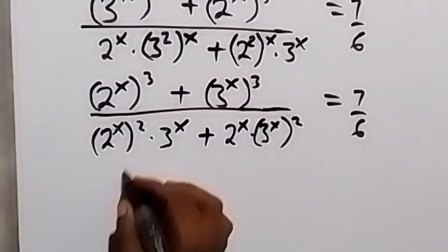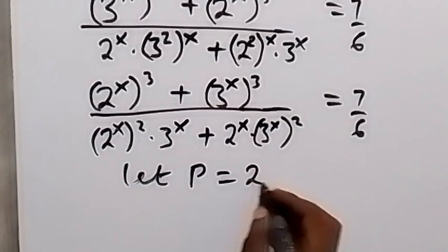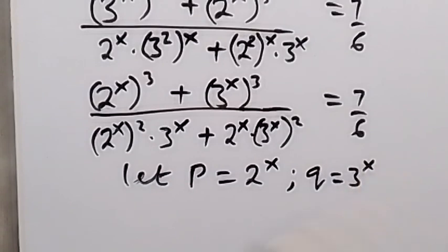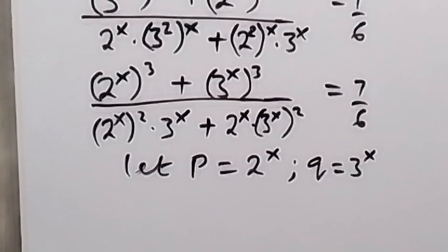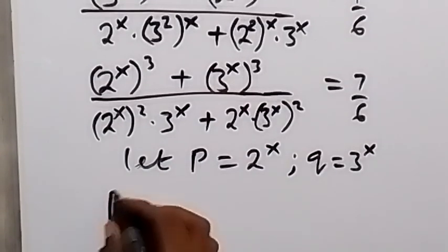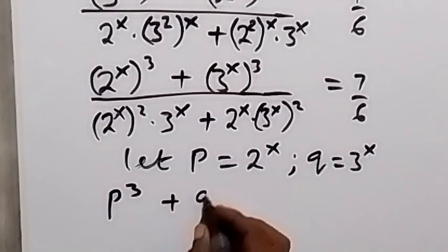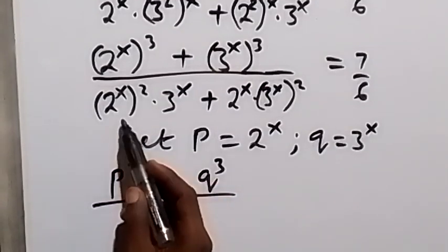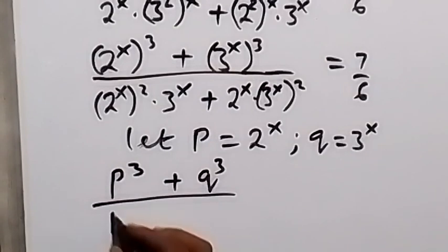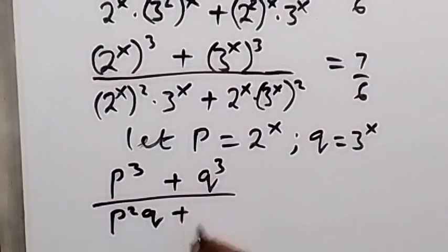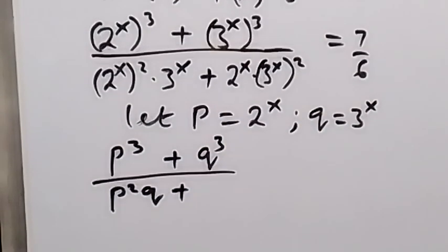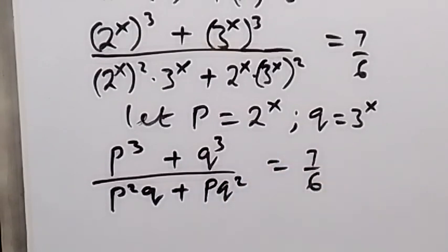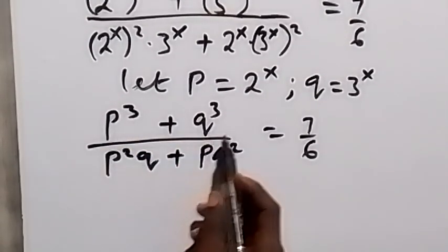From here, let's use letters to represent these terms. Let t equal 2 raised to power x and let q equal 3 raised to power x. In terms of t and q, the equation becomes t cubed plus q cubed in the numerator, divided by t squared times q, plus t times q squared, in the denominator. This equals 7 over 6.